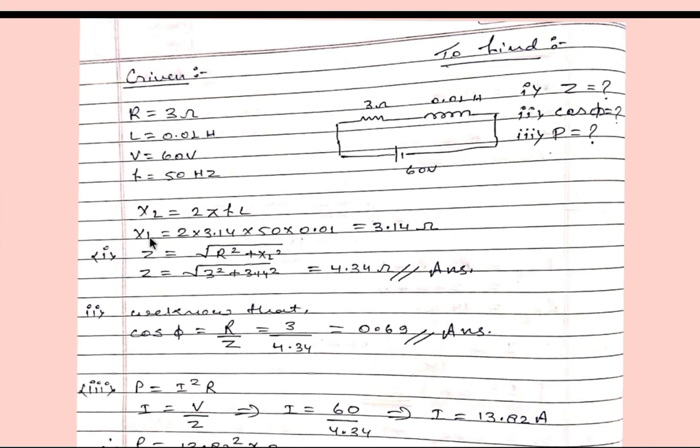So we know that XL inductive reactance equals 2πfL, then we will get inductive reactance XL equals 3.14 ohm. We have one formula for impedance Z equals square root of R squared plus XL squared. So Z equals after putting all the values of R and XL, we will get Z equals 4.34 ohm and it will be our first answer.